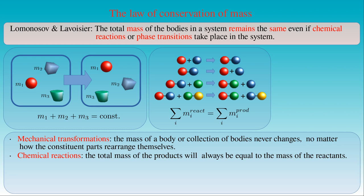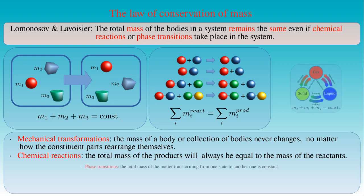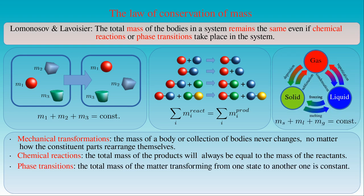The third case where conservation of mass holds is phase transitions, where the total mass of matter transforming from one state to another is constant. Solid materials can melt into a liquid or liquids can freeze and solidify. Liquids can evaporate and become gas, or gases can condense to a liquid. In deposition, gas transforms into a solid; in sublimation, solids convert to gases. Whichever phase transition happens in a system and whichever phases exist together, the total sum of the masses of the gas, fluid, and solid phases is constant. We conclude that matter can change forms but its mass is always conserved.